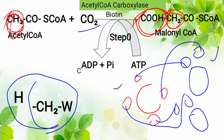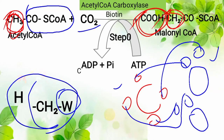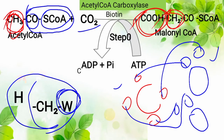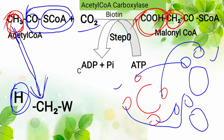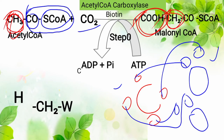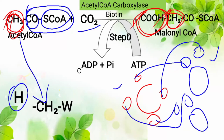This W represents the ketone group and coenzyme A together. The H here is coming from the CH3 — it was CH3 before, but we have taken one hydrogen from it, so it is now CH2. So we removed one hydrogen from the methyl group — it's now CH2.